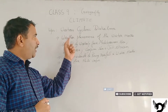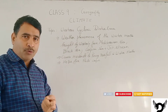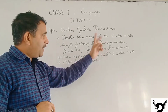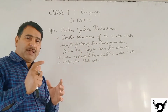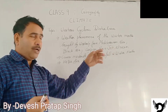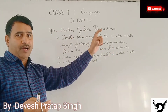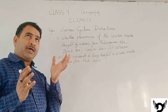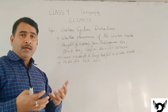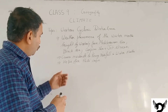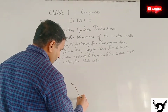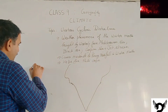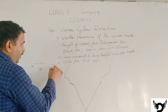The Western Cyclonic Disturbance is created by the Cyclonic Disturbance, and the first thing is that it has a model for the Cyclonic Disturbance.